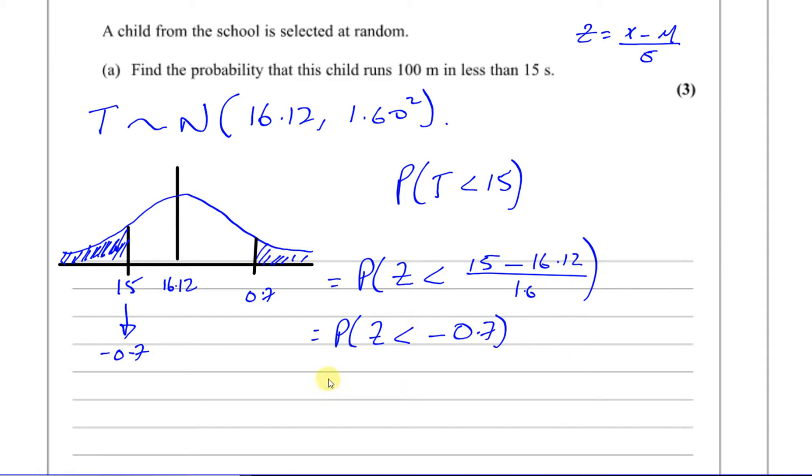So this is the same as the probability that z is greater than 0.7. But again, the z values that we have only tell us the area to the left of those values. So basically, if we take the area to the left of 0.7, if we do 1 minus that area, we'll end up with what we need.